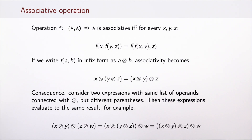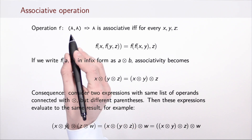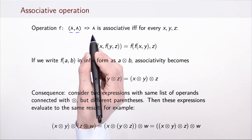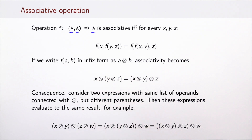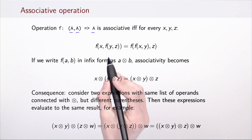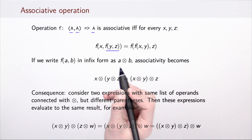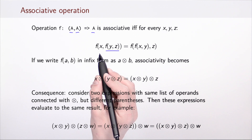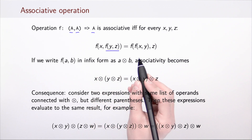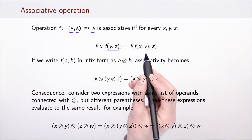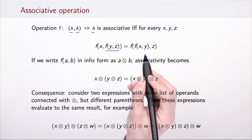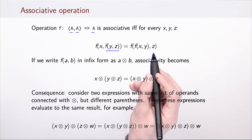In general, an associative operation takes two elements of some type A and returns an element of the same type, and it must satisfy the following property: for every x, y, and z, combining first y and z and then combining x with that result is the same as combining x and y first and then combining that with z.